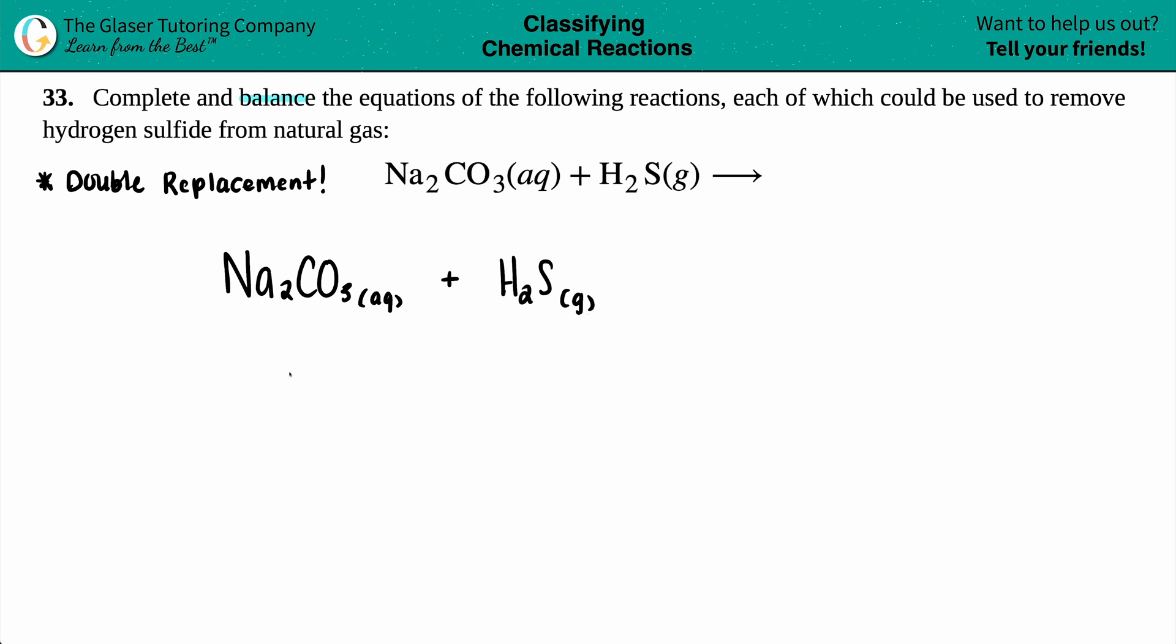Whenever you're breaking down a compound, there's only going to be one split. So you have to figure out where that split is. For this one, it's a little bit challenging because I have three different elements. Is the split going to go between the sodium and the CO, or between the sodium and carbon on one side and the oxygen on the other? This comes from knowing and picking out your polyatomic ions. I see this CO₃, which is a pretty famous polyatomic ion. Polyatomic ions always stick together, so I know that the break is going to go between the sodium and the carbonate.